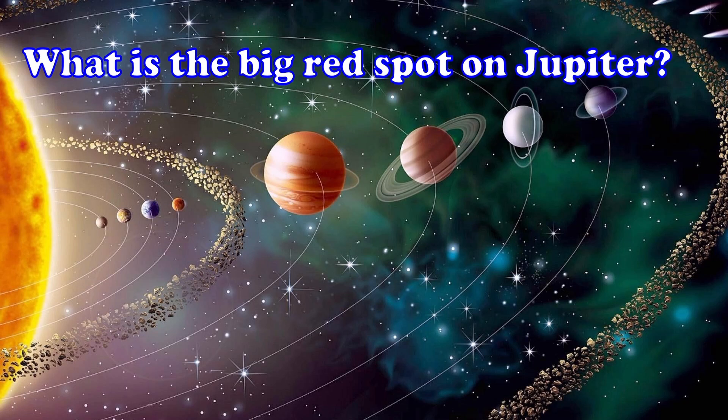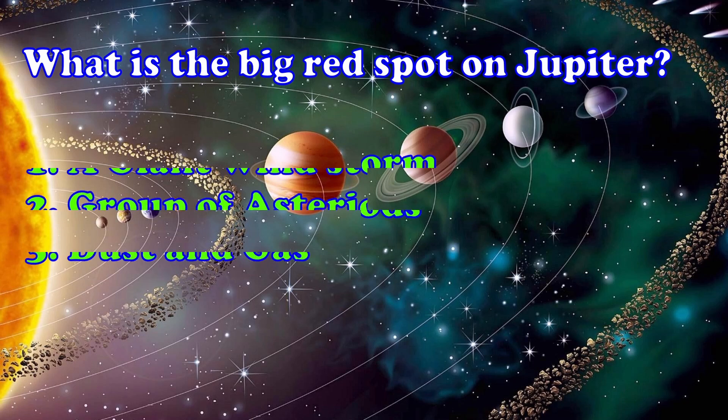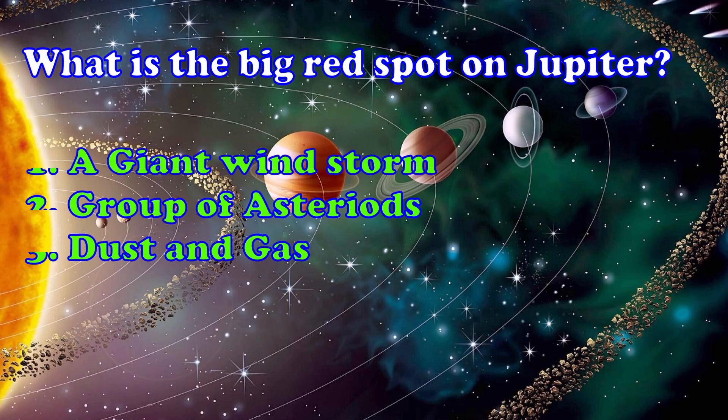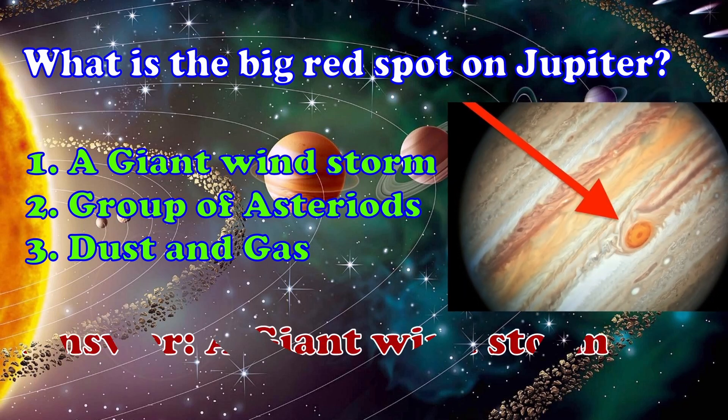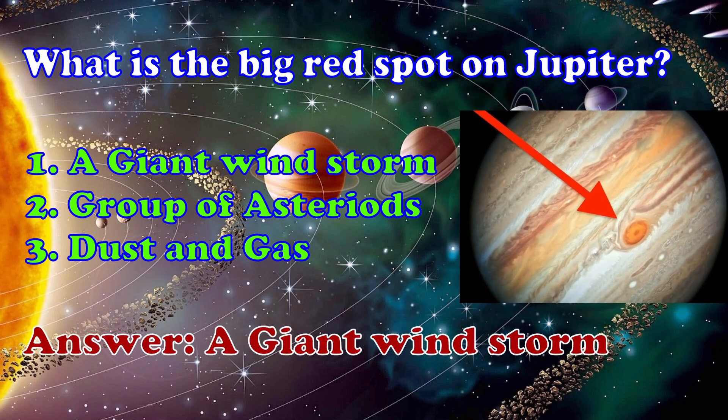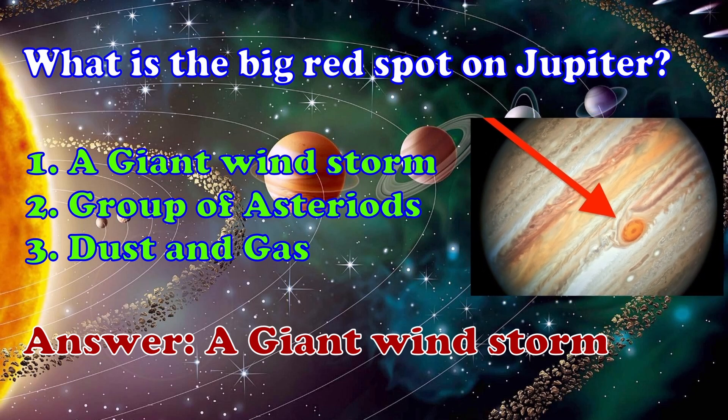What is the big red spot on Jupiter? 1. A giant windstorm, 2. Group of asteroids, 3. Dust and gas. Answer, a giant windstorm.